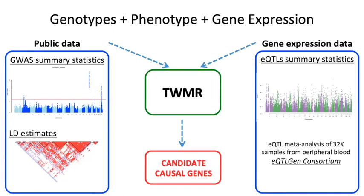To run our TWMR, we need three different kinds of data: summary statistics from GWAS for the phenotype we want to study, an external reference panel to estimate the linkage disequilibrium between the SNPs in our model, and for the QTL gene expression data, we use summary statistics from a large QTL meta-analysis performed on 32,000 samples. We merge this data together, and at the end, running TWMR produces a list of candidate causal genes.